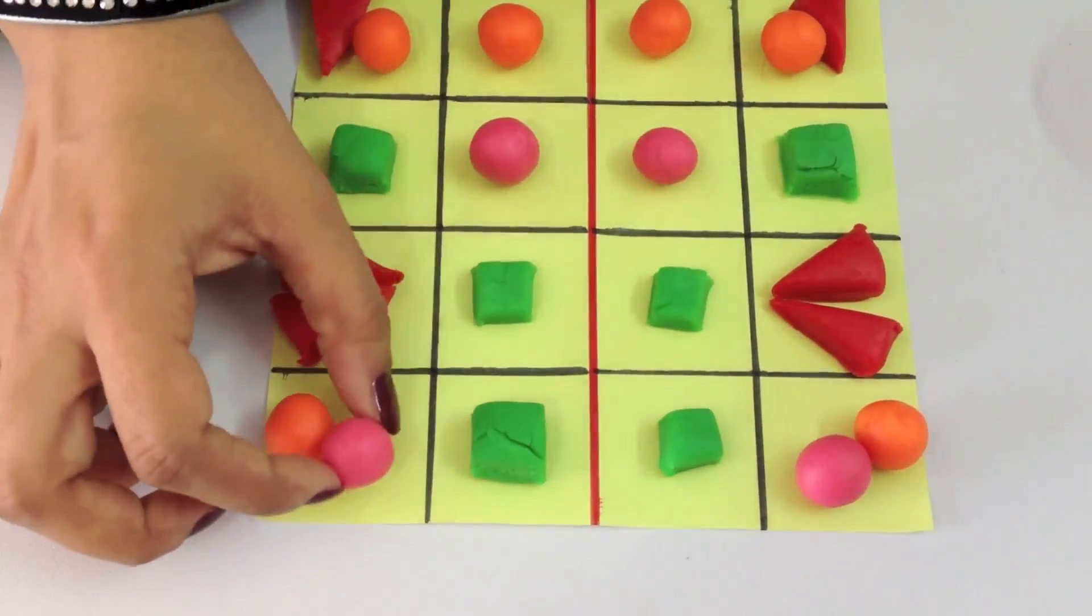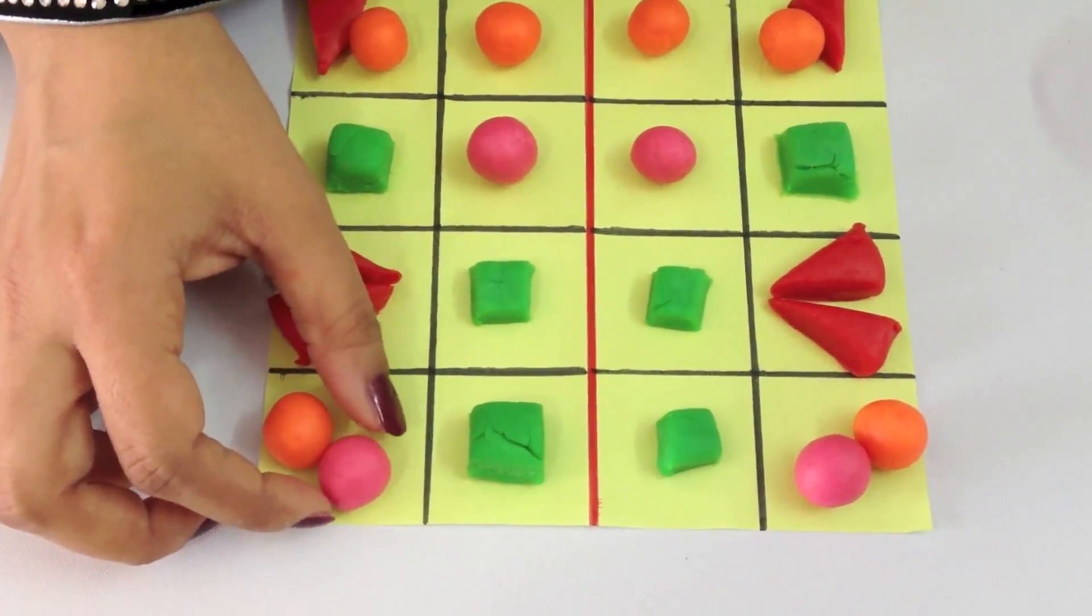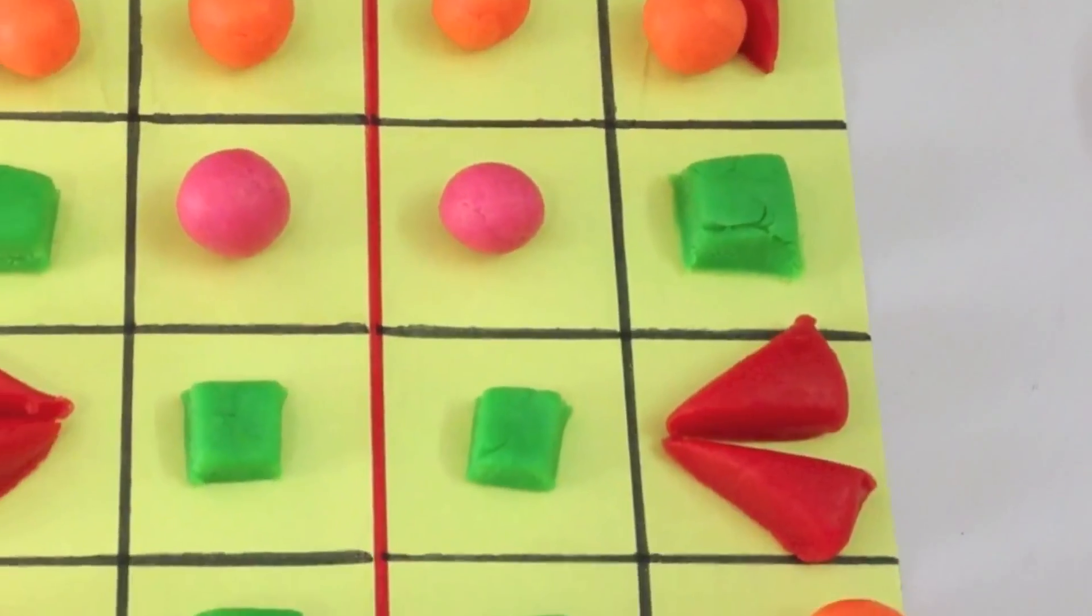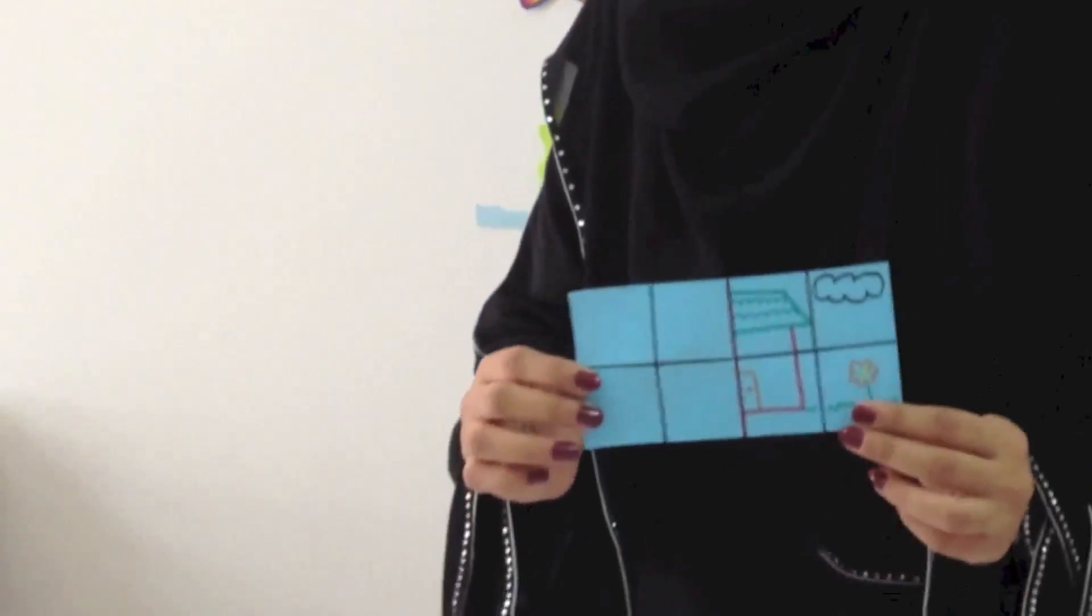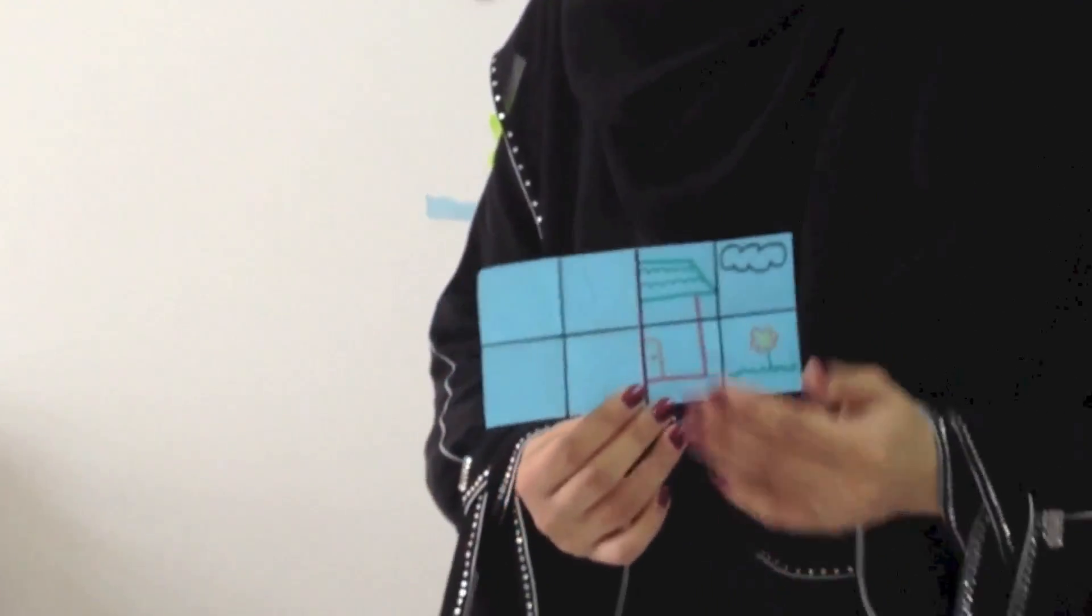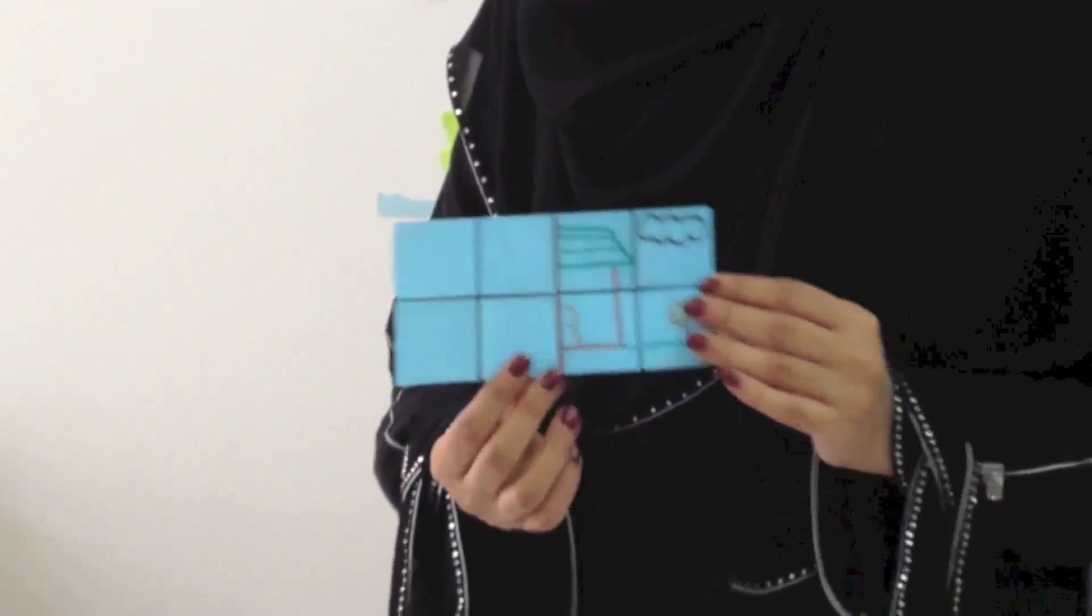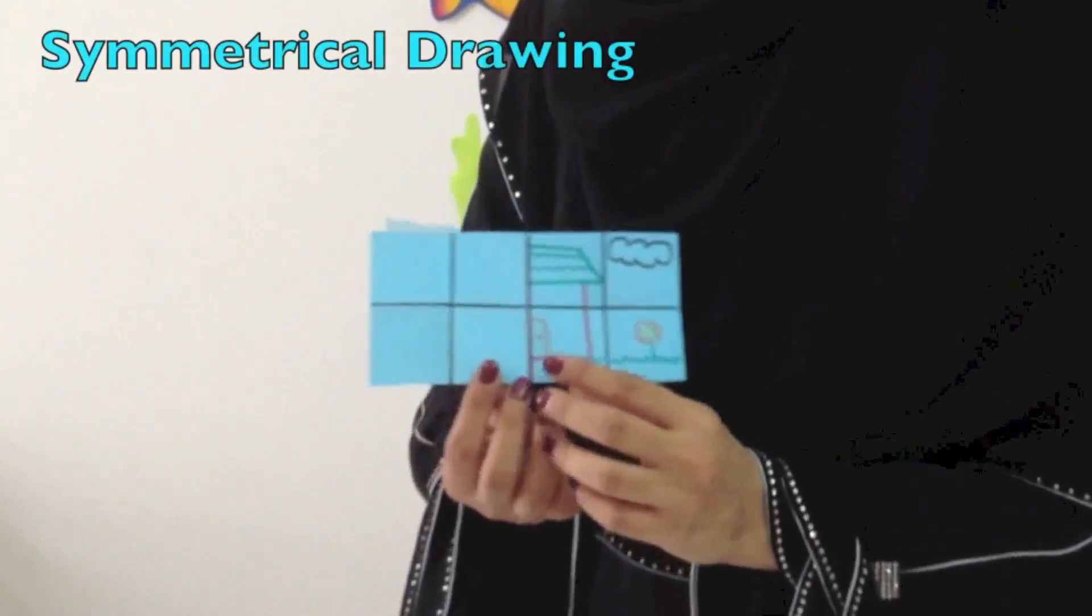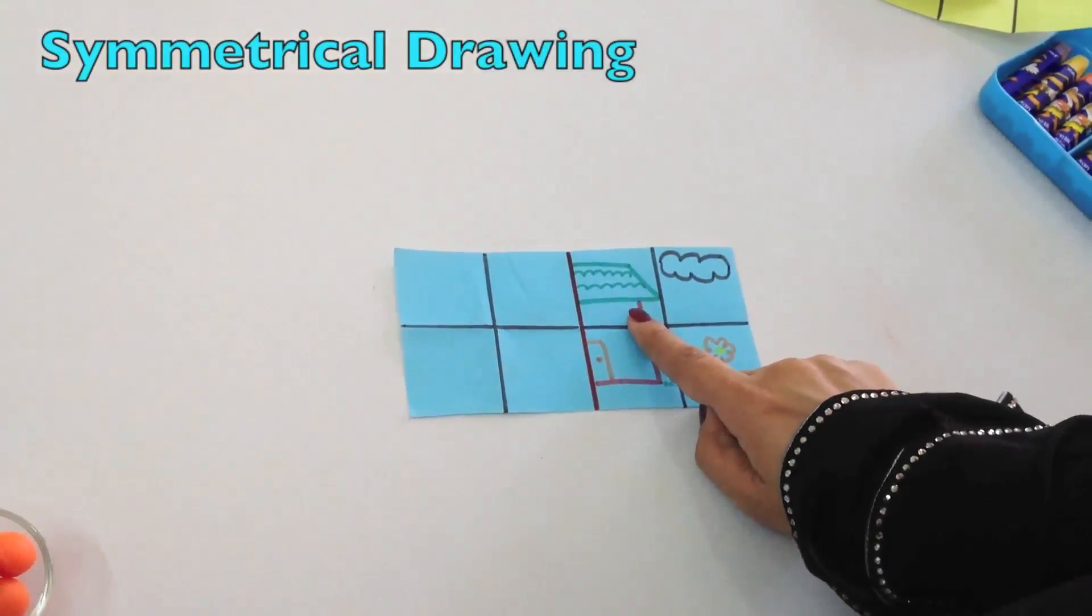Now here I have a picture which is half done. This picture has to be created symmetrically on the other side. We are going to draw square by square.